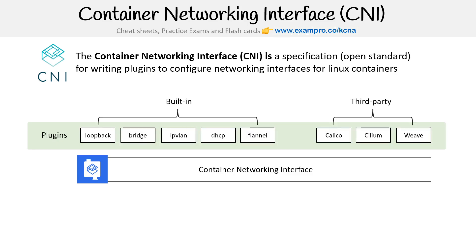There are plugins — there are built-in plugins that ship with it, and there are third-party plugins. This is where we say in-tree and out-of-tree, but maybe not — that's the way I'm thinking about it. You might recognize some things here like Bridge and Flannel, and then on the side we have Calico, Cilium, and Weave, which are all very popular third-party options to install.